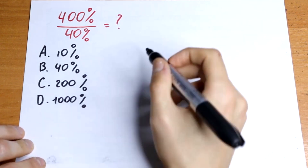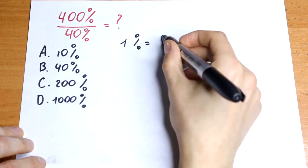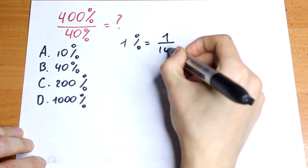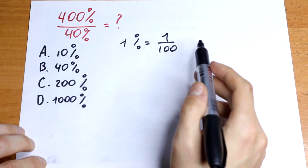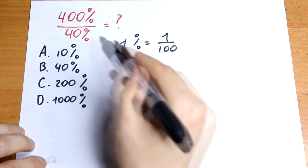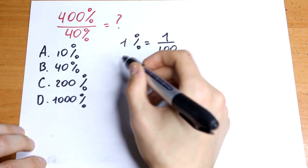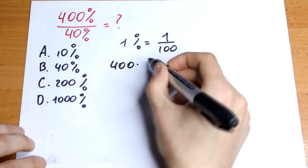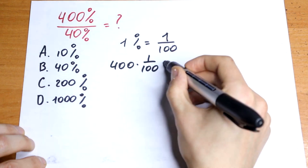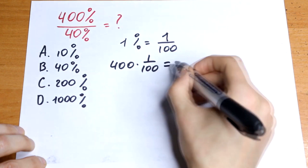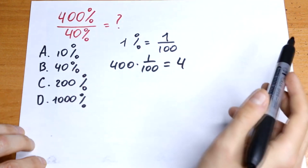We need to know that 1% is equal to 1 part out of 100. Using this logic, we can simplify this a little bit. We can write 400% as 400 times 1 over 100, so it will be equal to 4. And this will be our numerator.